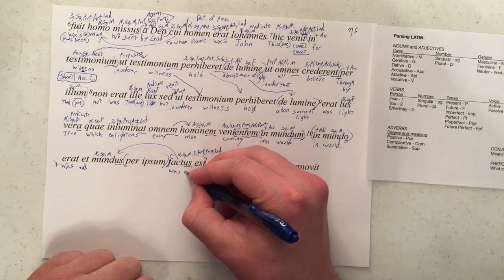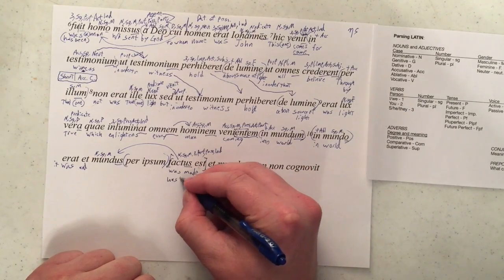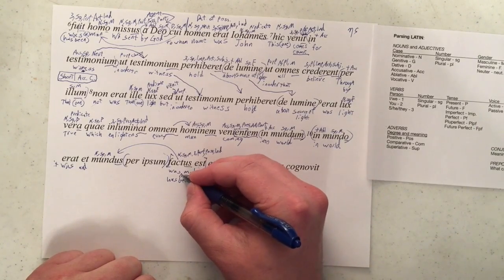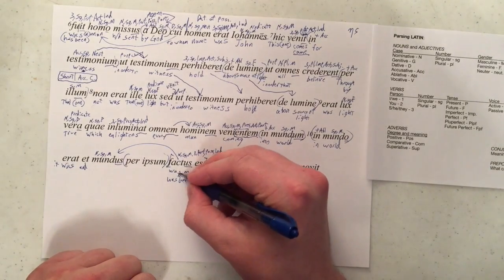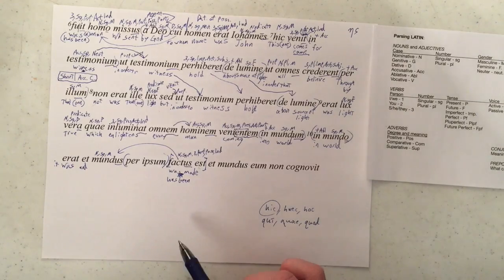We're going to go with the easy perfect, was made. But we could also say, of course, has been. If we wanted to make clear that this is not an imperfect action, but is a completed action. It's up to you which one you would choose. I'm going to go with the easy one, as I said.